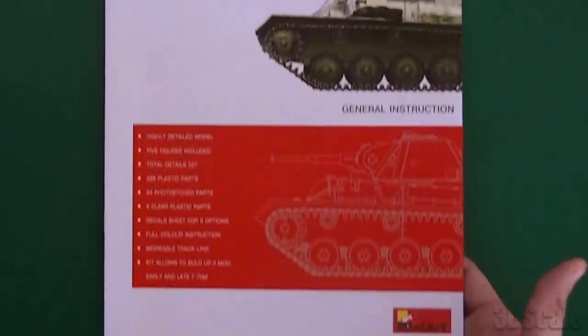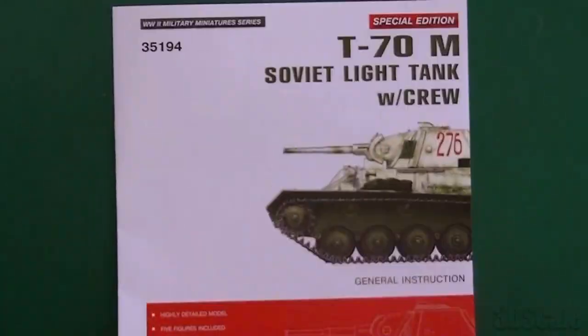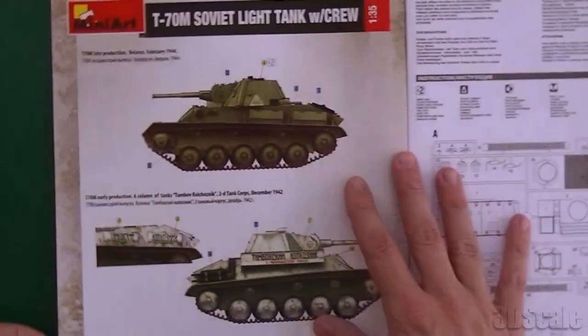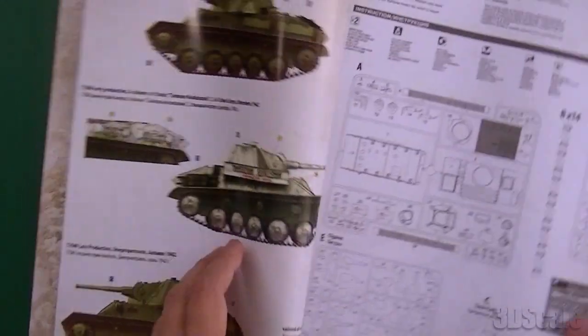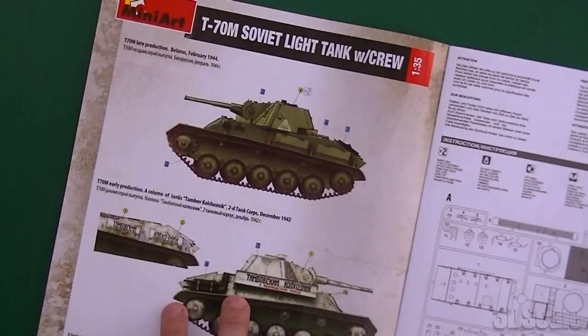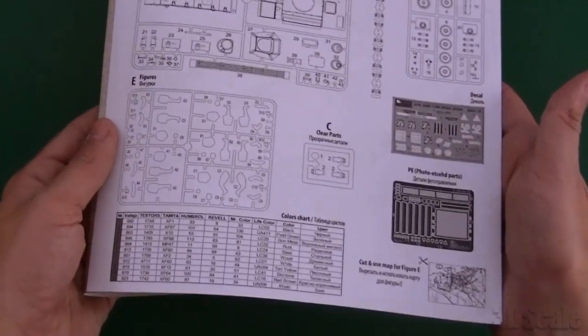The instruction book is full color and an actual book which is nice. We've got our color callouts in actual color on the first page and then our sprue map on the second page.